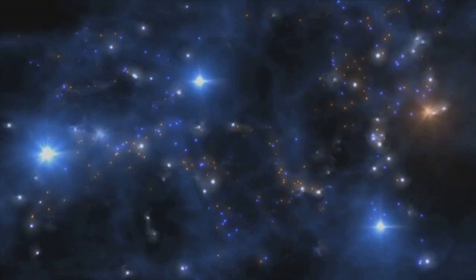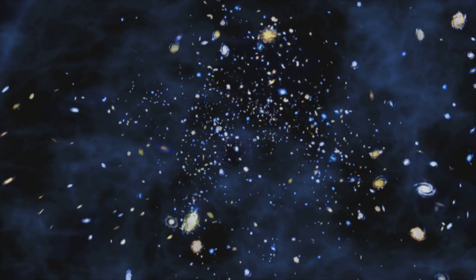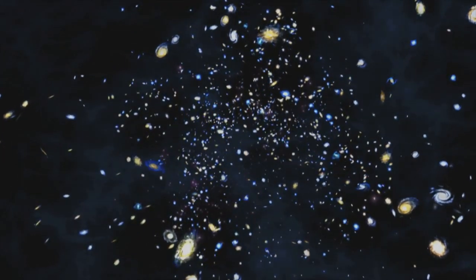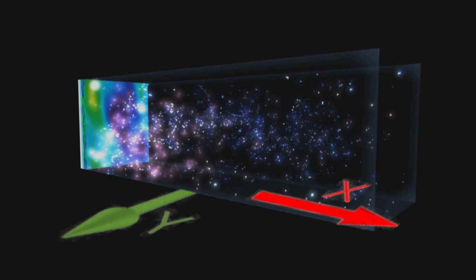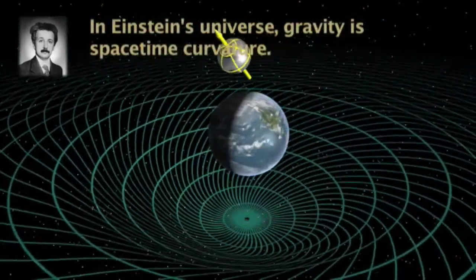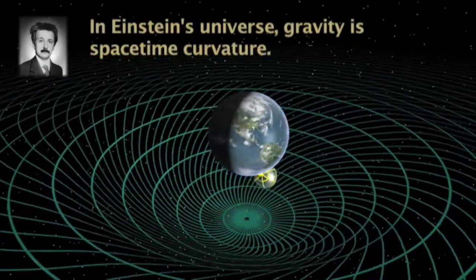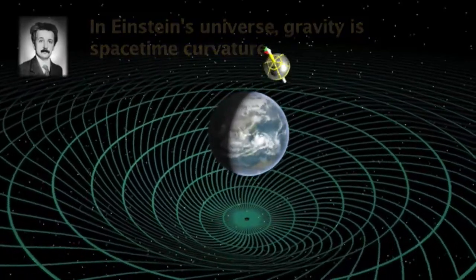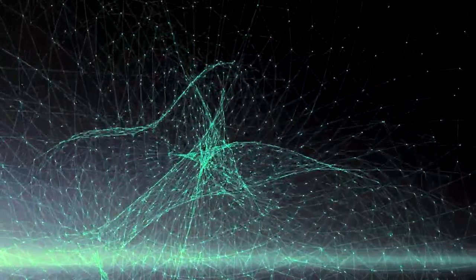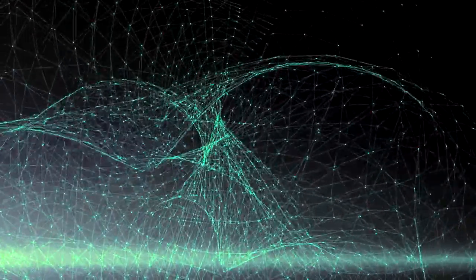One of the more stunning predictions of string theory is that our universe is made up of extra dimensions. Space, according to classical physics, is three-dimensional, based on three coordinates, X, Y, and Z. Einstein introduced the fourth dimension, time, into his general theory of relativity. String theorists have calculated that as many as six extra dimensions make up our world.